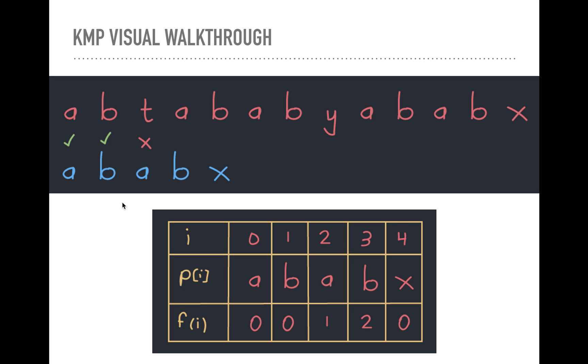Here's a visual walkthrough. It's actually super easy to understand, like with this visual walkthrough. Obviously this is our long text and this is our pattern. So we look at a, that matches with a, b matches with b, a, nope, doesn't match with t.